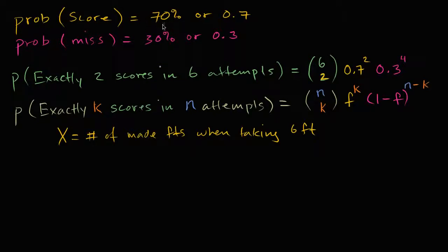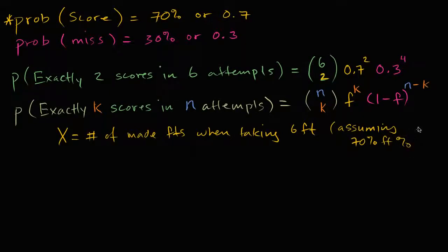We're going to assume what we assumed in the first video in this series: a 70% free throw percentage. So let's figure out the probabilities of the different values that X could actually take on. What is the probability that X is equal to zero?